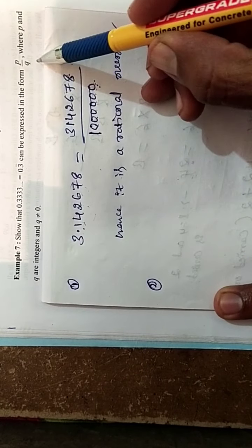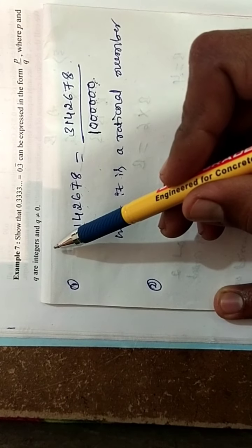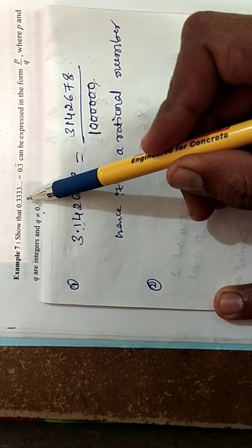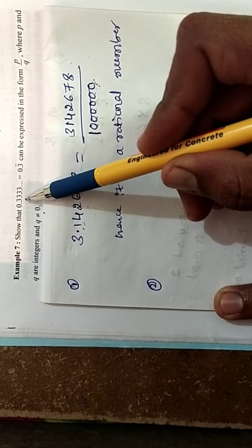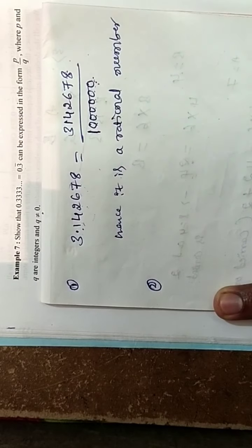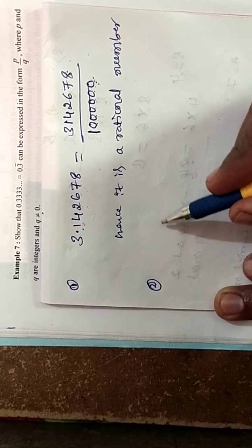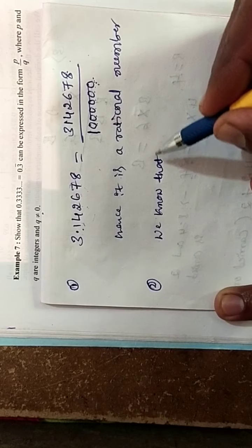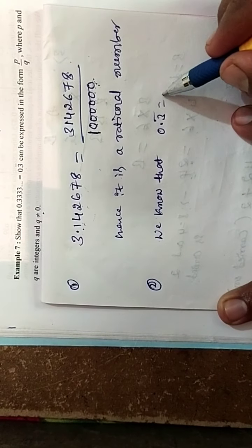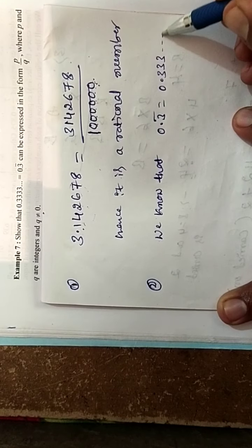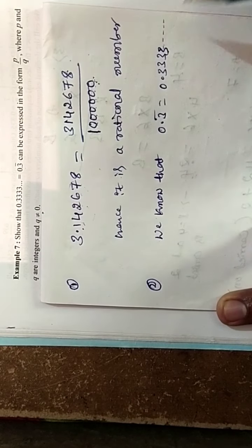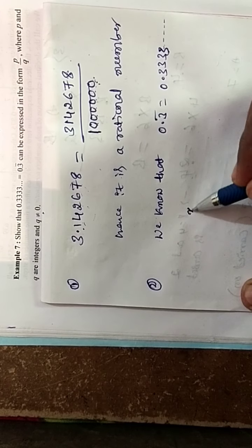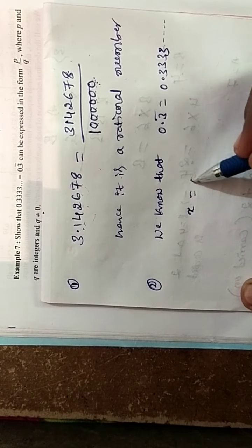This can be expressed in the form of p by q, where p and q are integers and q is not equal to 0. We know that 0.3 bar is equal to 0.333... So let us call it as x. So x is equal to 0.3 bar.